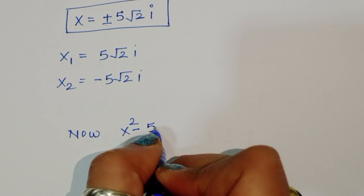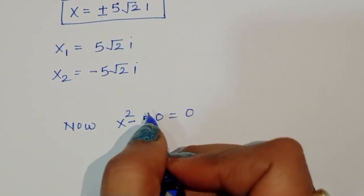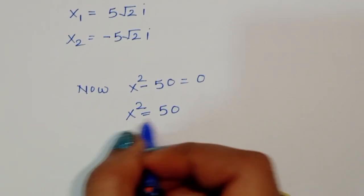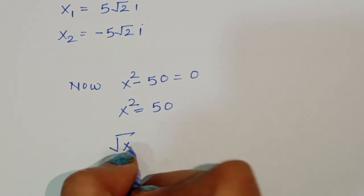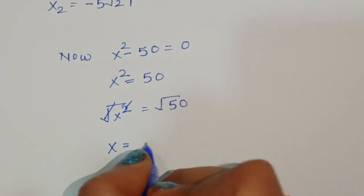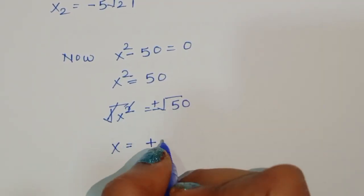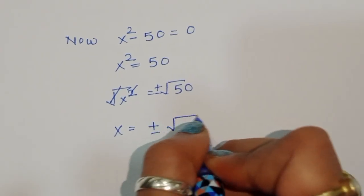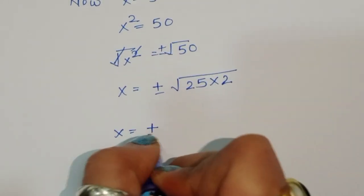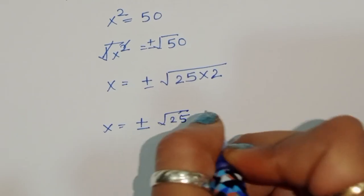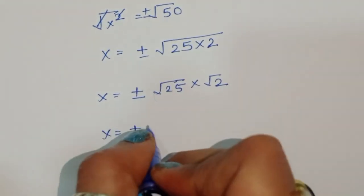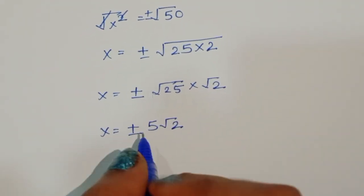The second equation is x squared minus 50 equals 0, so x squared equals 50. Taking the square root on both sides, x equals plus or minus the square root of 50. We write 50 as 25 times 2, so x equals plus or minus the square root of 25 times the square root of 2, which gives x equals plus or minus 5√2.